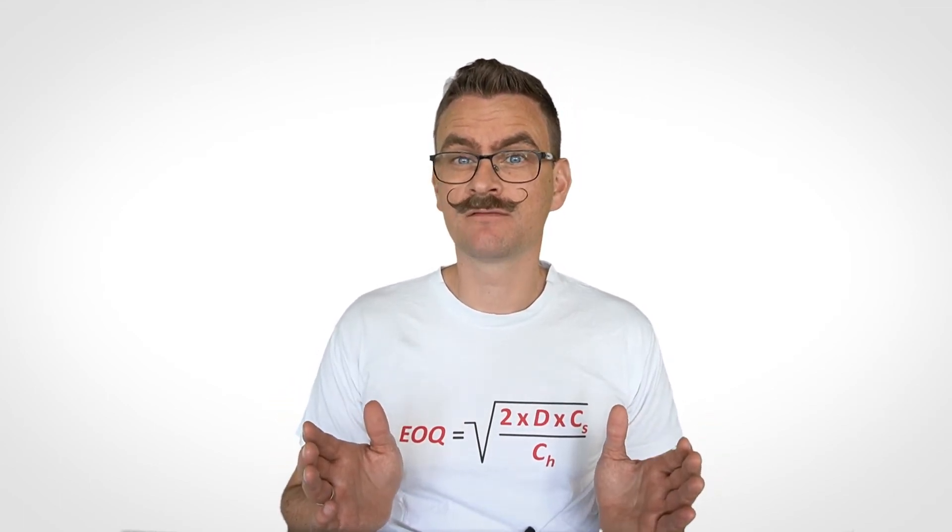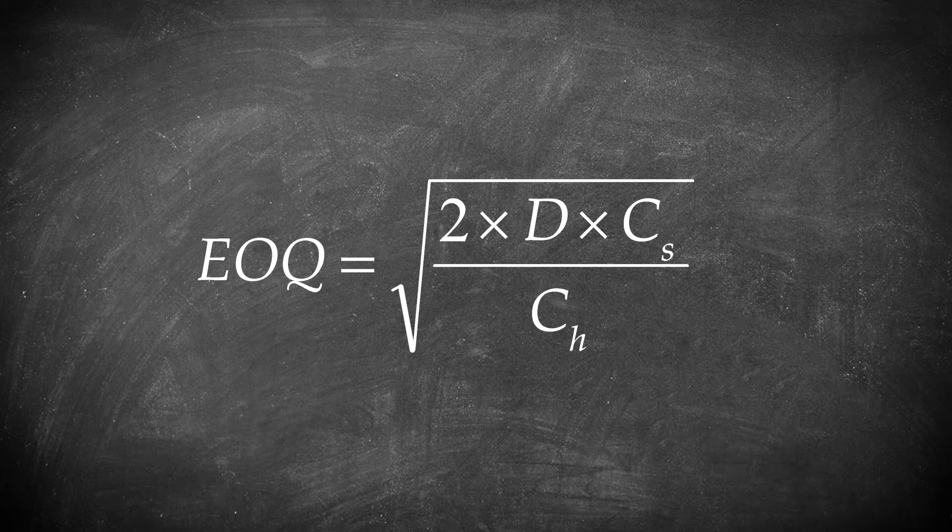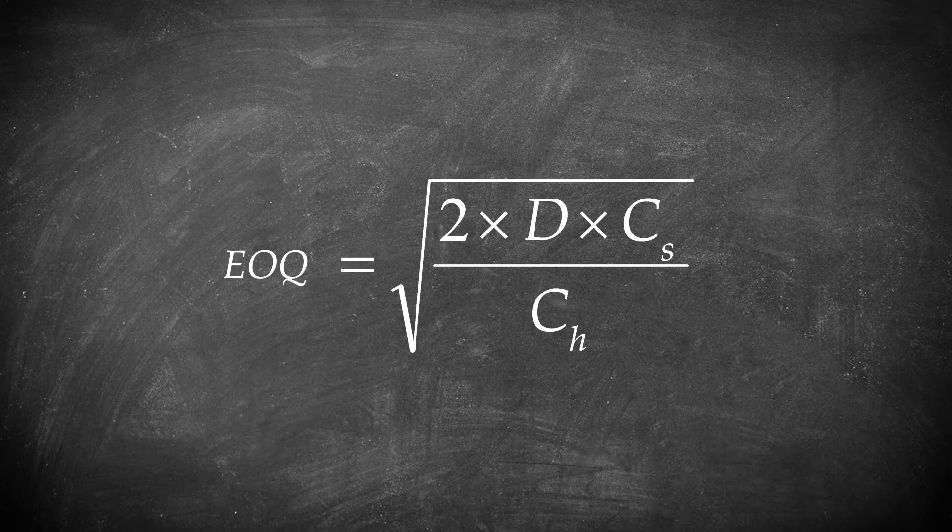And now we can use the EOQ formula to understand what will happen when external factors change. For example, what will happen if order processing is fully automated? Yes, CS will drop towards zero, making the EOQ smaller, hence more frequent orders of smaller quantities.